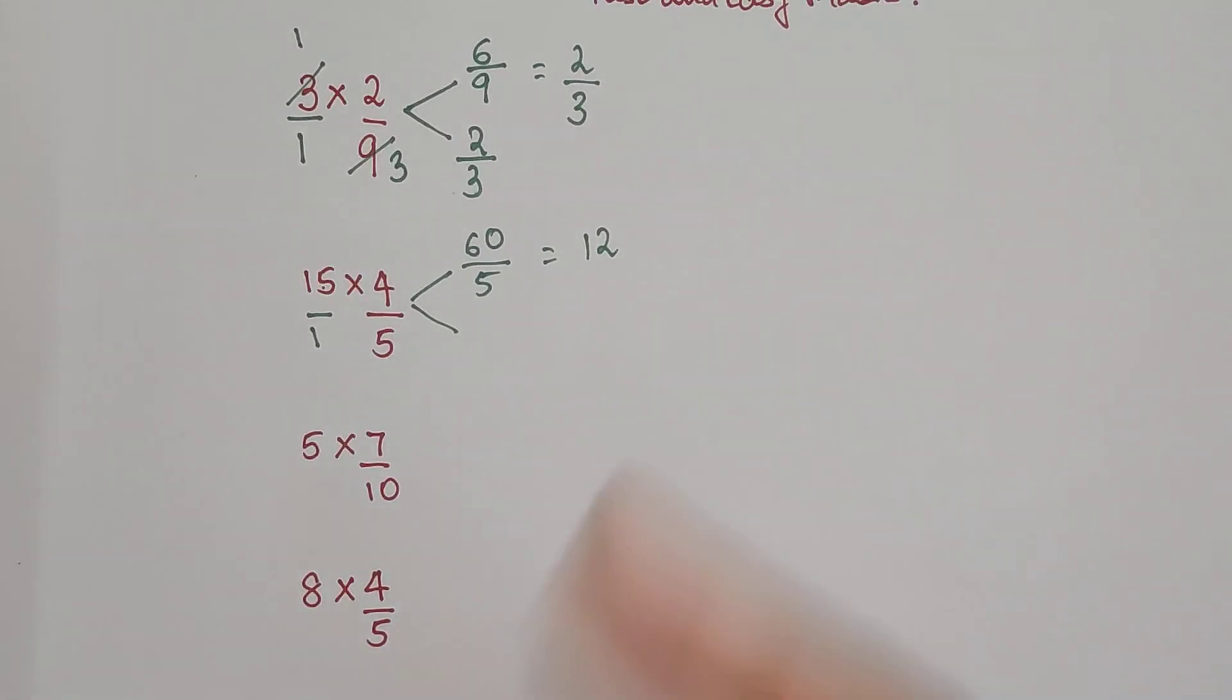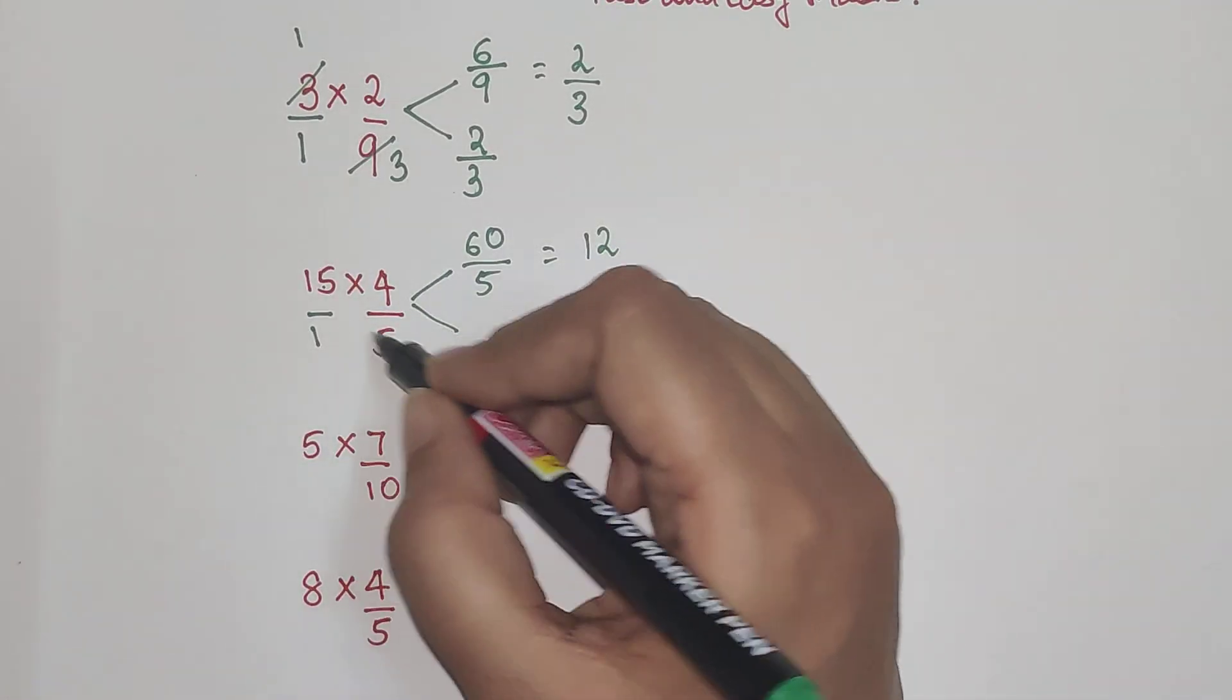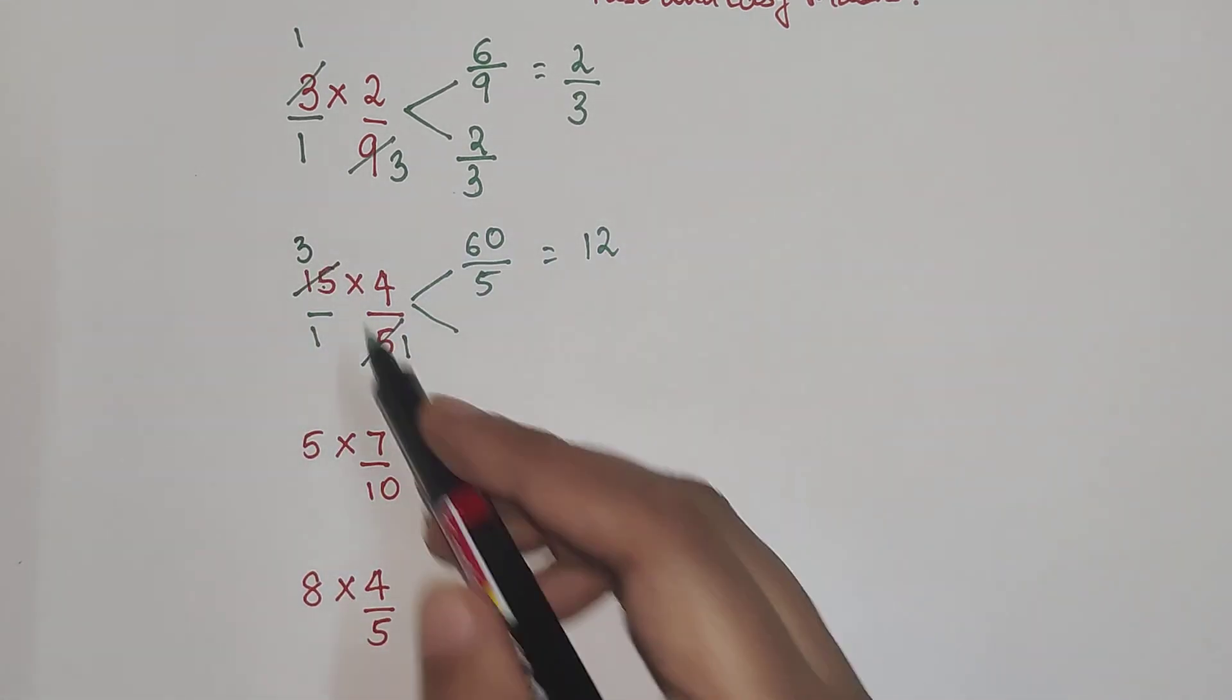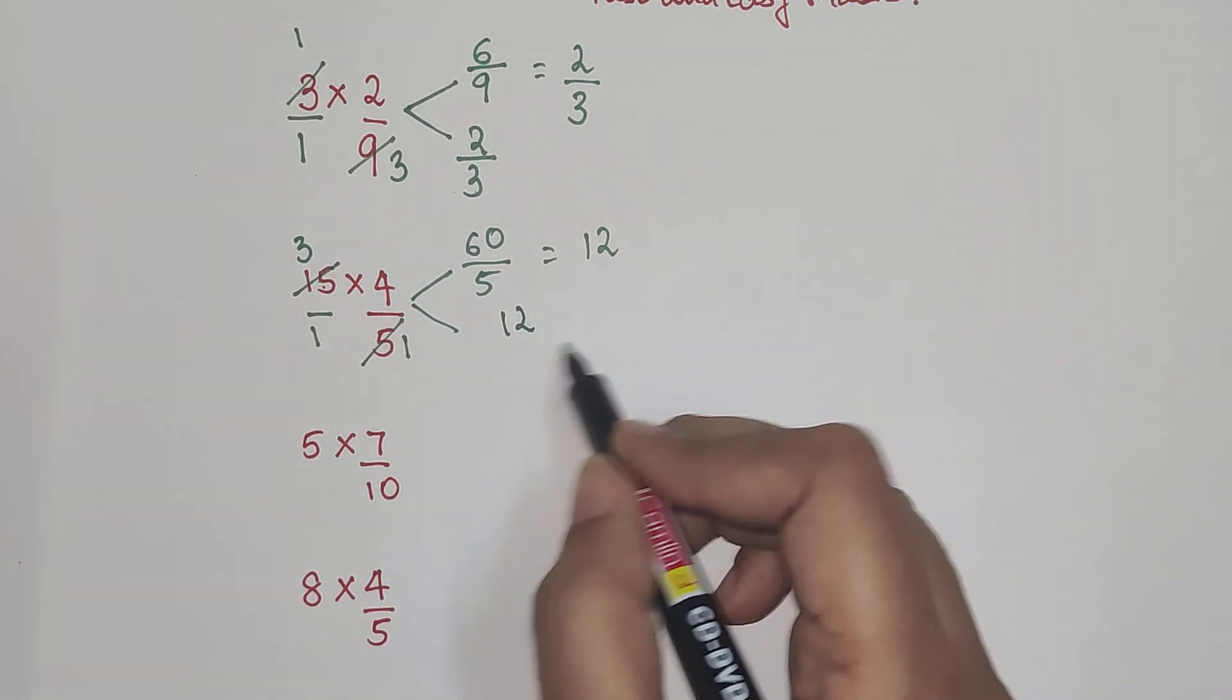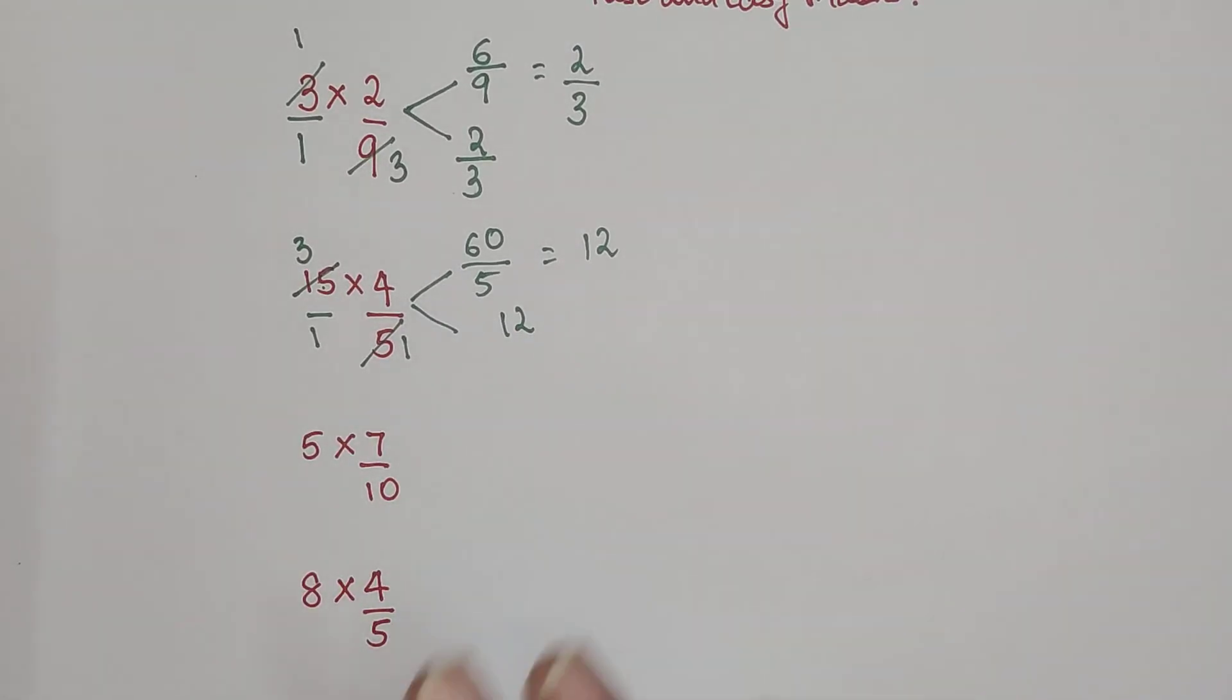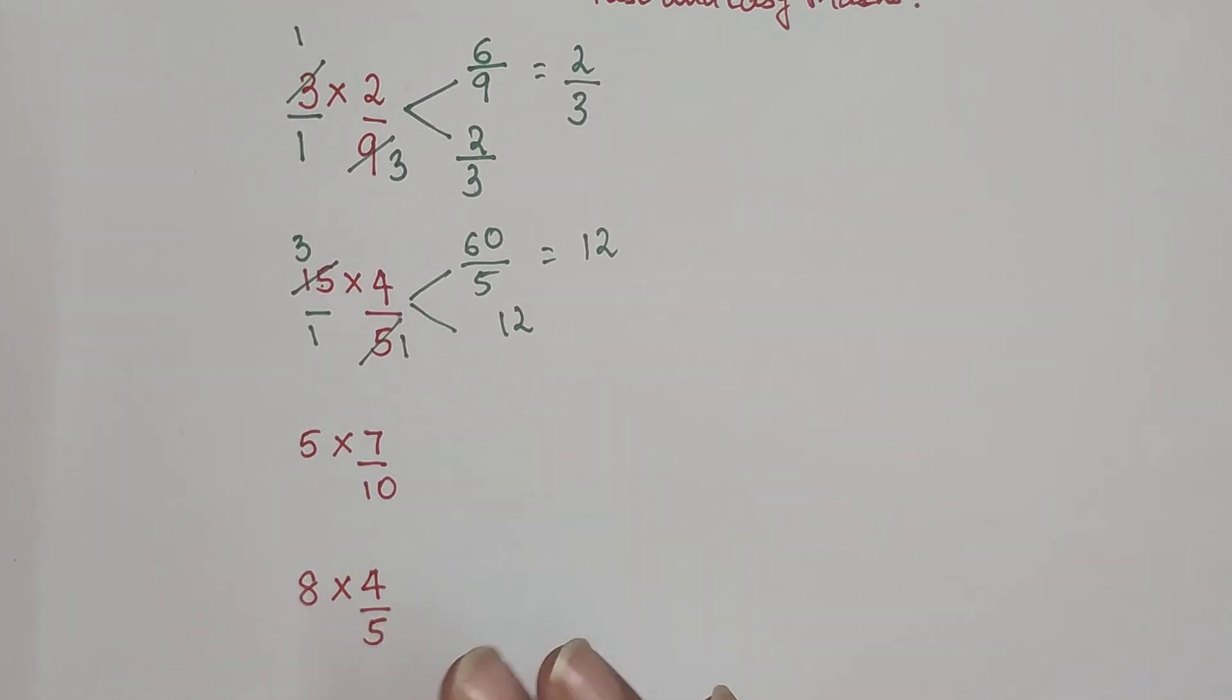Now understand like I said we can directly do the cancellation. So let's do that. So I know that 15 comes in 5's table because 5 ones are 5 and 5 threes are gets you 15. So then you just have to do the multiplication which is 3 into 4 which is getting you 12 upon 1 into 1 which is supposed to be 1. So anything whenever you have a numerator upon 1 you can just write the numerator.